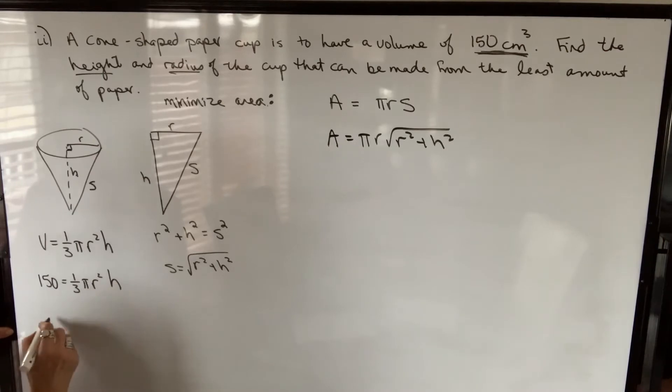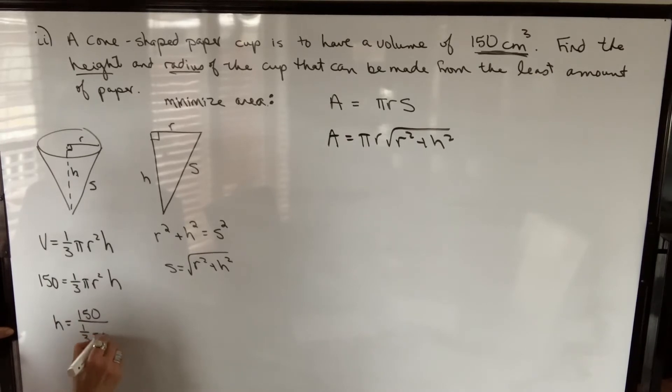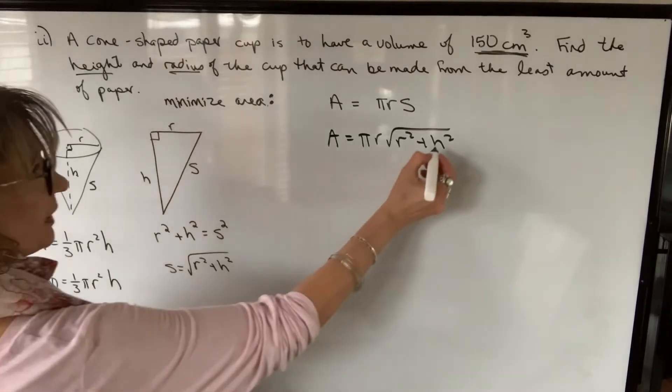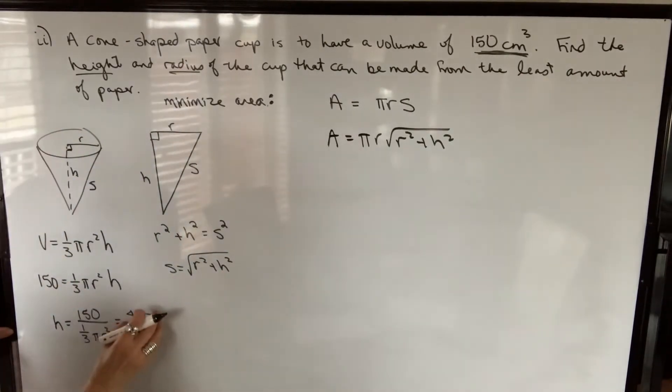I can isolate h. h will be 150 divided by one third pi r squared. And then I'm just going to multiply numerator and denominator by three. So that's going to be 450 over pi r squared.